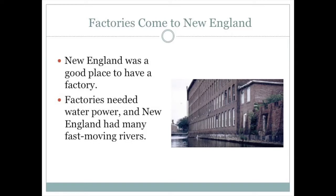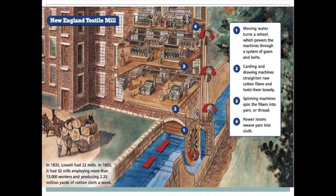The first place to have multiple factories in the United States was New England, which had land, labor, and capital. Factories needed water power, and New England had many fast-moving rivers to power the machinery. A diagram shows how water from a river would power a water wheel, which would power a pulley system, which would bring power to machines on many levels of the factory. Each machine would be operated by one worker — most likely a woman — doing the work of multiple people.